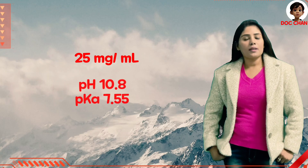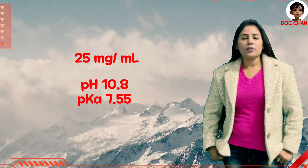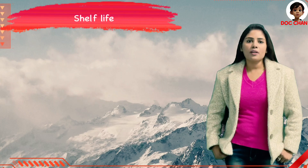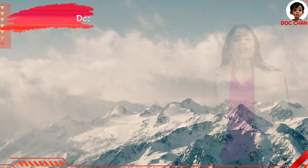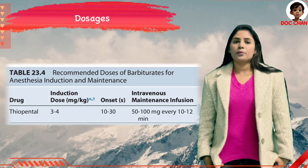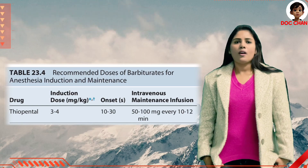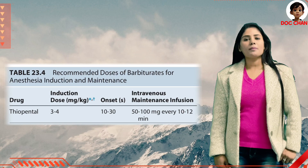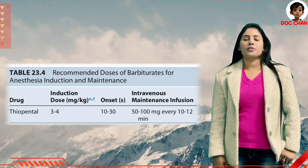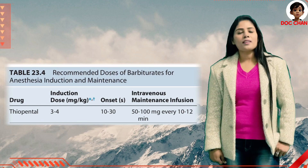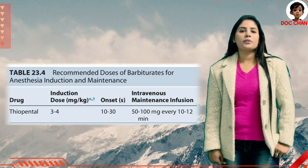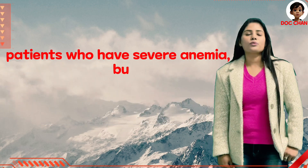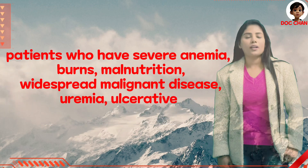Its pH is 10.8 and pKa value is 7.6. The manufacturer mentions it should be discarded in 7 hours. Induction dose is 3 to 4 milligrams per kg. Onset of action is 10 to 30 seconds. One arm to brain circulation time is 5 to 15 minutes. Maintenance dose is 50 to 100 milligrams, which can be repeated over 10 to 12 minutes. Infusion dose is 2 to 3 milligrams per kg per hour.